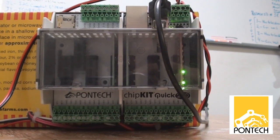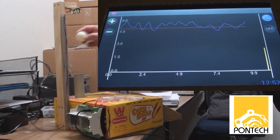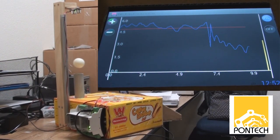The ping pong ball's height is detected with an ultrasonic sensor, while a PID control loop running on the Quick 240 controls the fan speed via a PWM signal.